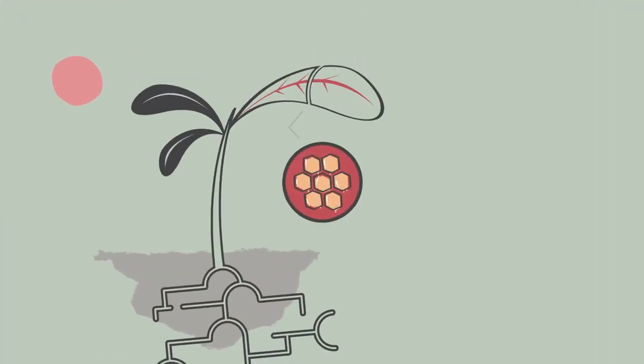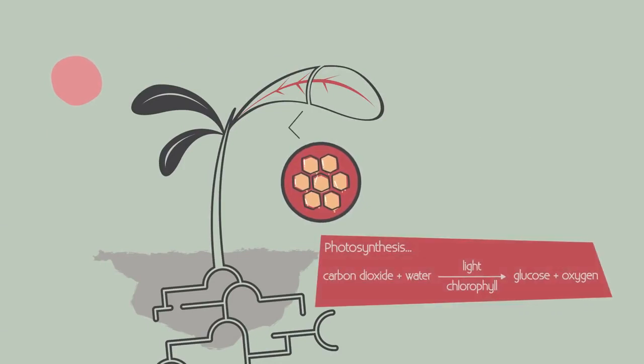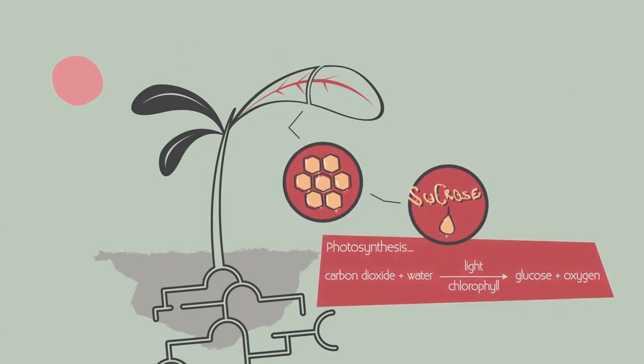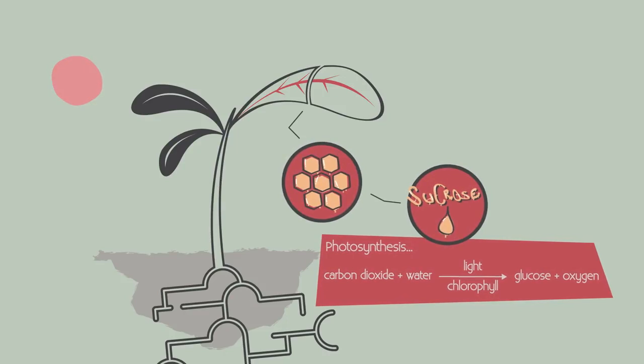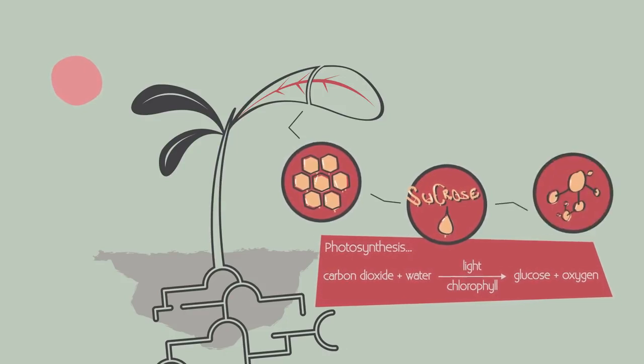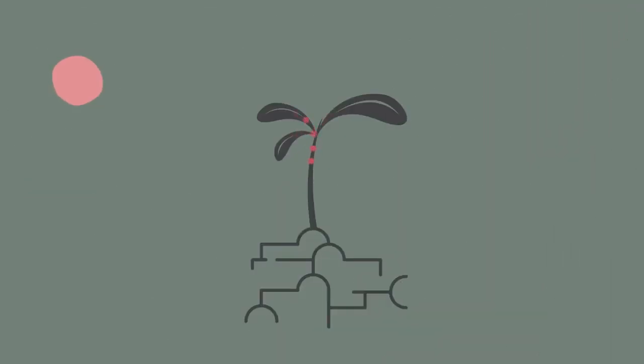Glucose is made in the leaves by photosynthesis. Glucose is converted into sucrose in the leaves, which then enters the phloem vessels, as do amino acids. They then need to be transported around the plant to every single cell. The areas of the plant where sucrose is made are called the sources, and where they are delivered are called sinks.